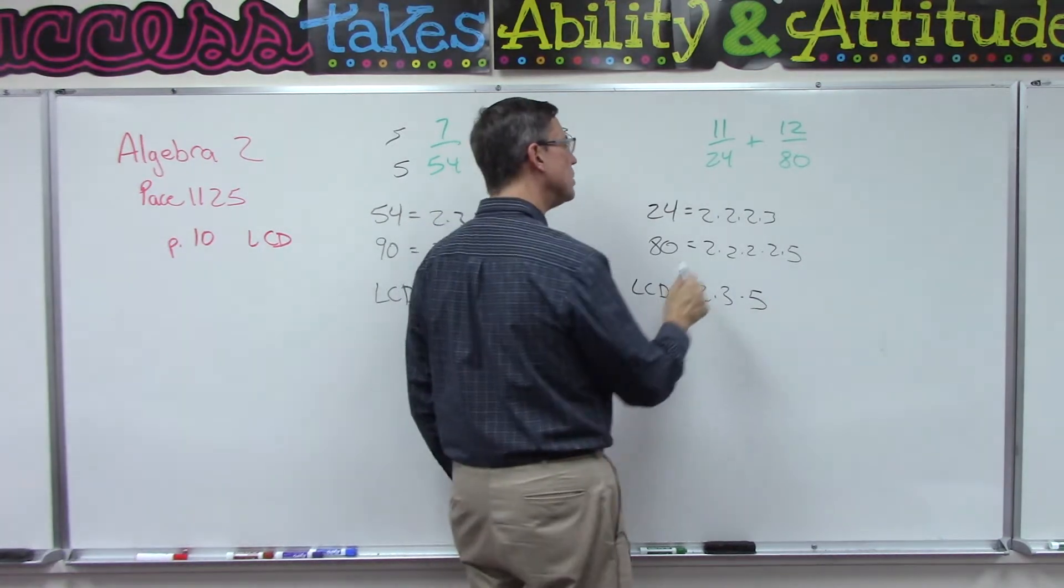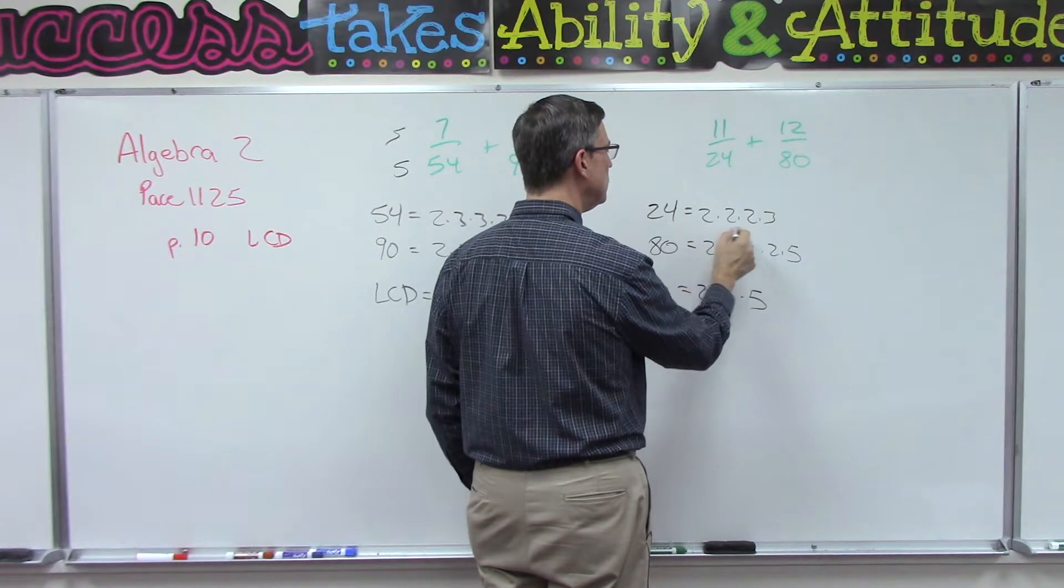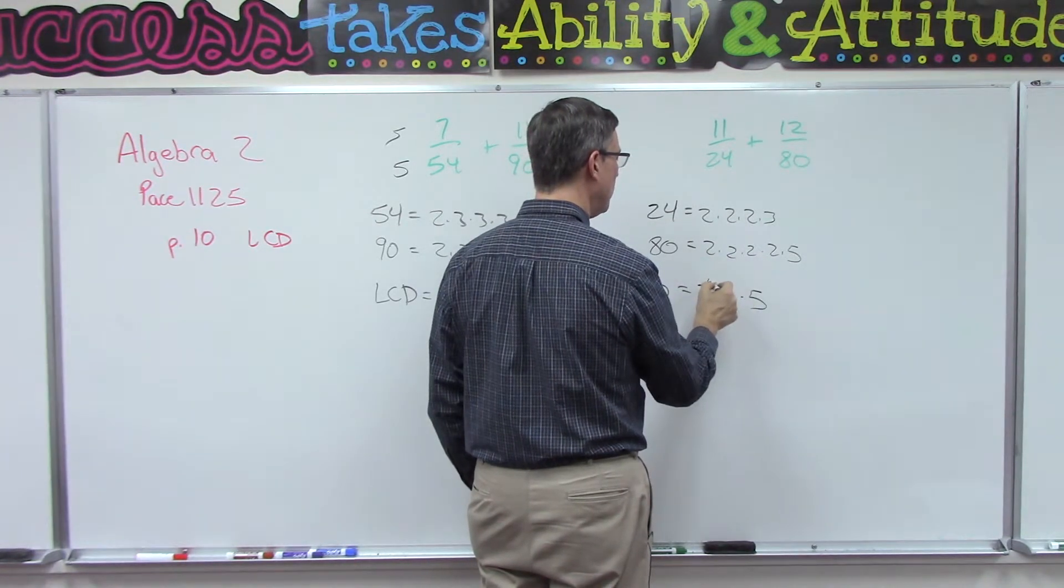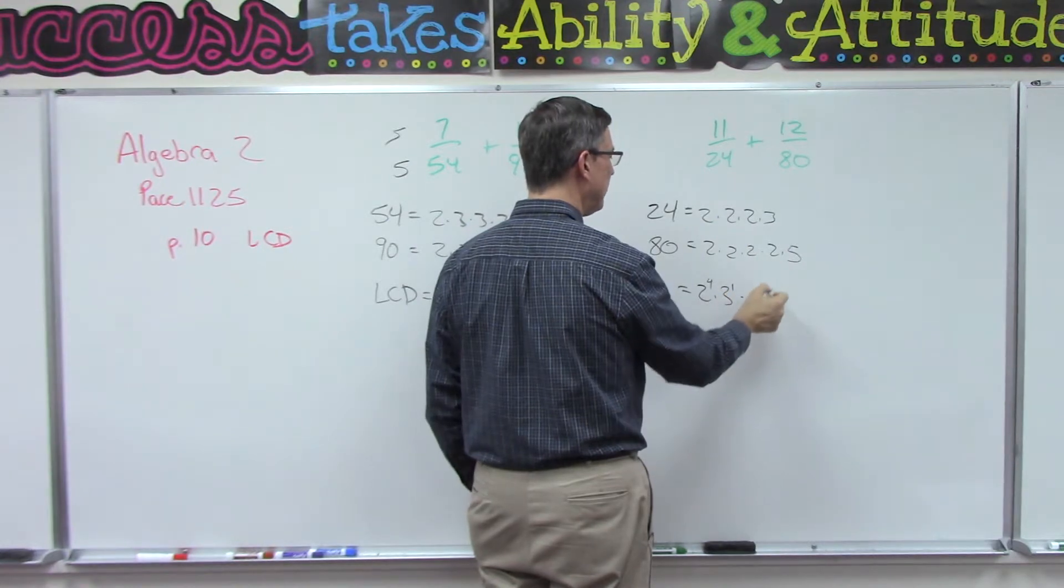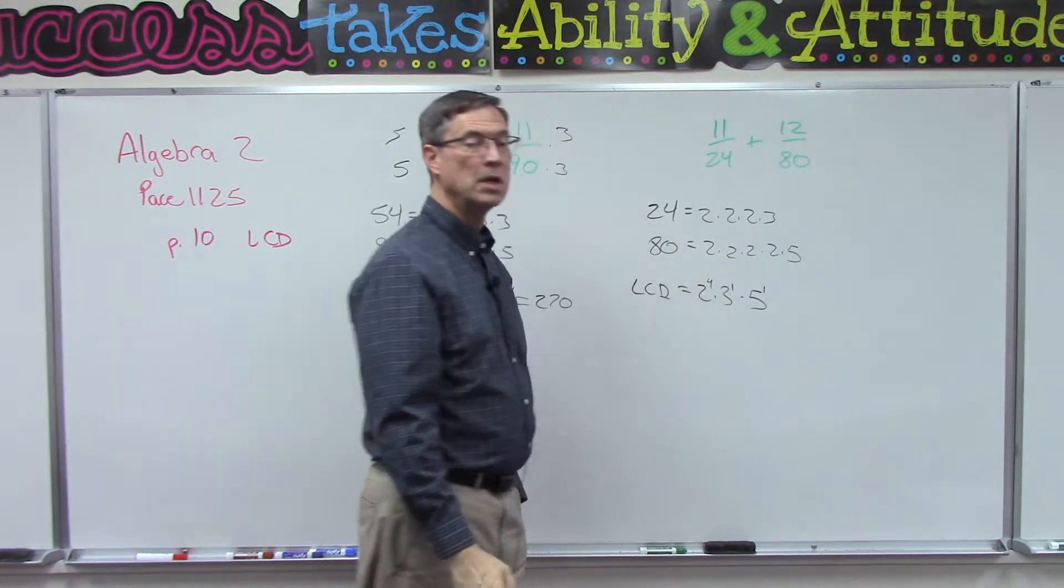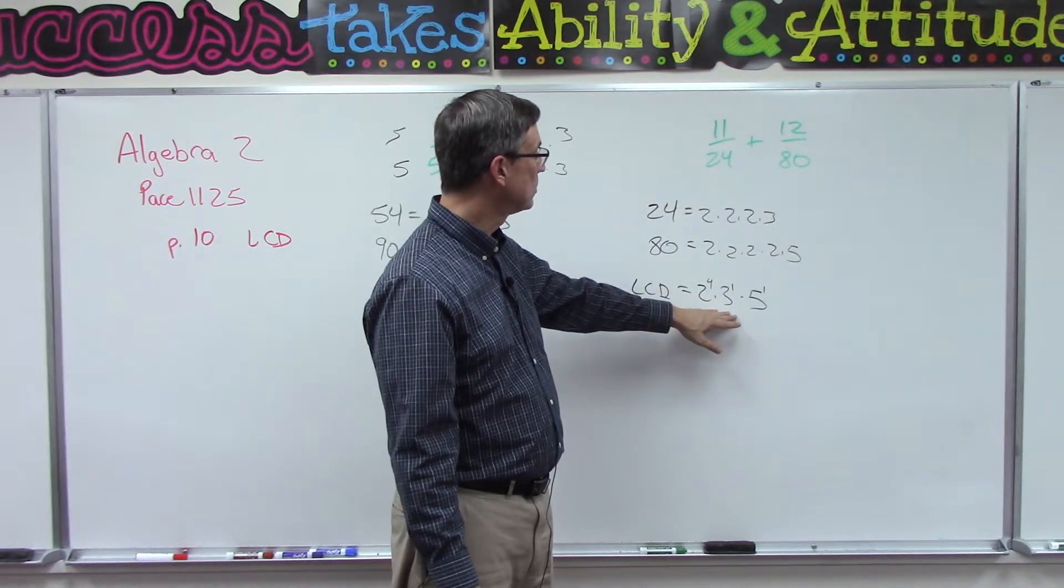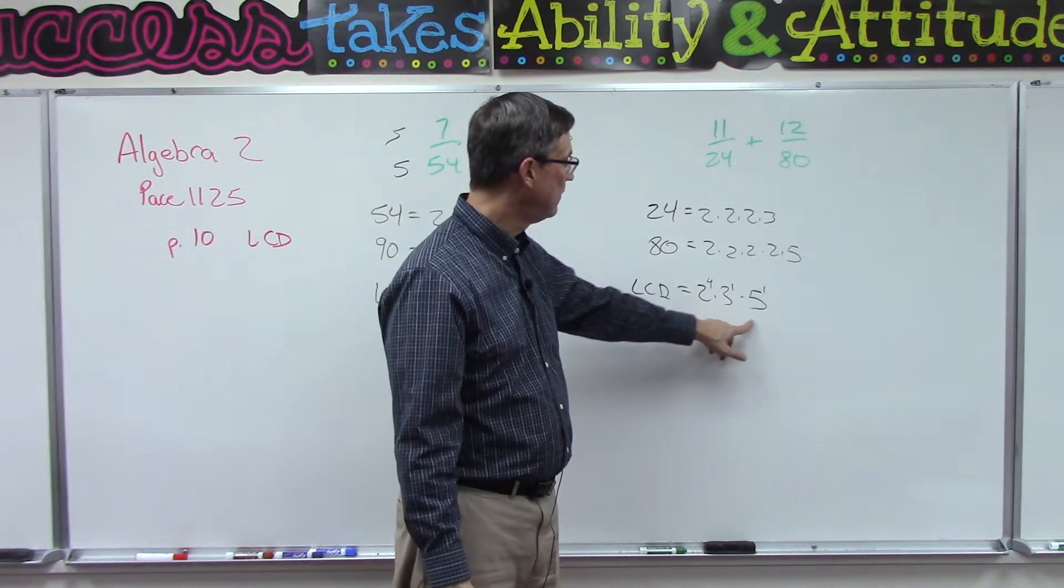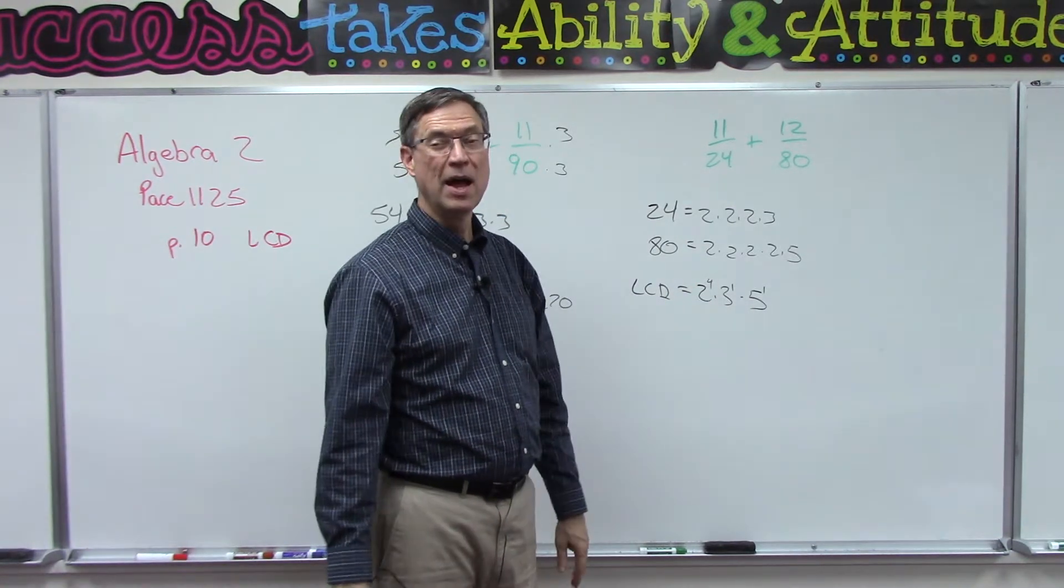No 7s, no 11s, no other weird numbers, just those numbers. So now I'm going to go back and see what's the most number of times that 2 is being used, and it looks like it's 4. 3 is used once, and 5 is used once. So to find the least common denominator, it looks like all I have to do is multiply 15 times 16.